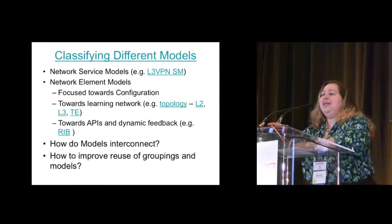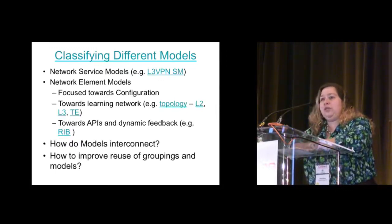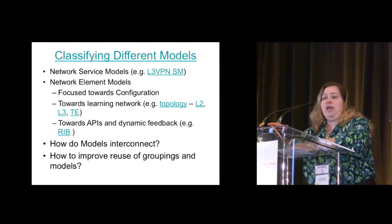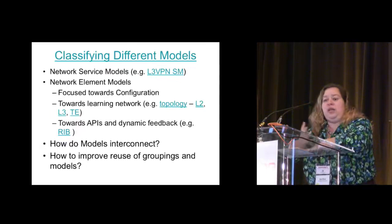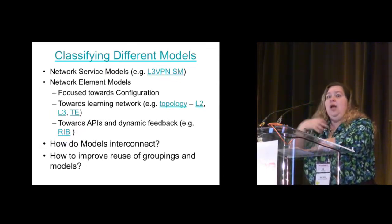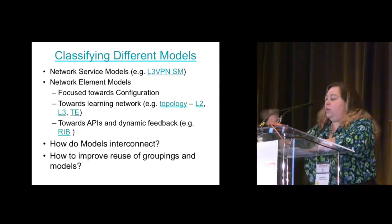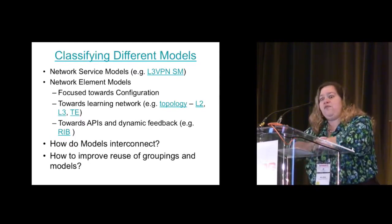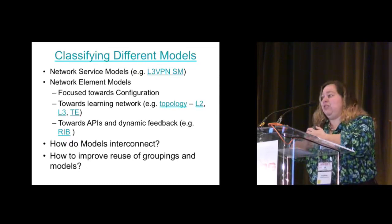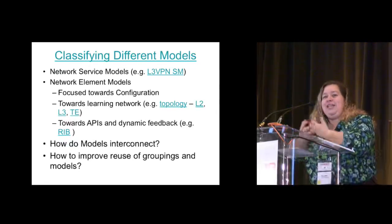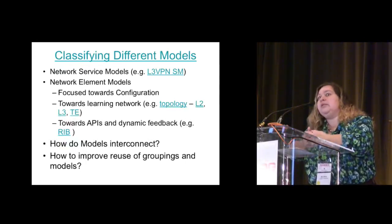Classifying models — data models are all at different layers. At the highest layer, not in routing but in ops and management, there's work going on on a service model: how do you do a layer three VPN? This is more towards a customer. Network element models are focused on configuration — one of the new pieces that Yang brings — but also towards learning the network. Also dynamic APIs, because there's a lot of interest in programmatic APIs and good interactions into the routers. There are links to drafts for topology: generic topology, layer two, layer three, traffic engineering, and RIB. You can actually install — I like to describe it as static routes on steroids. Take all of the abstractions you have and take advantage of them.